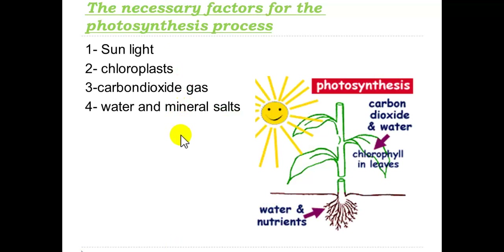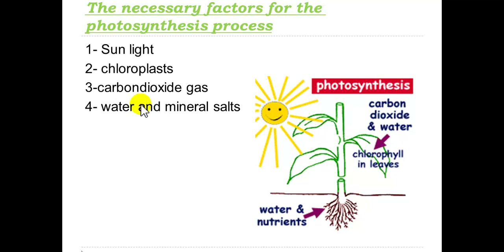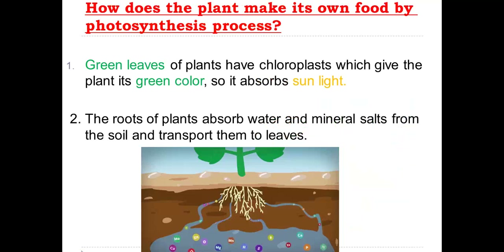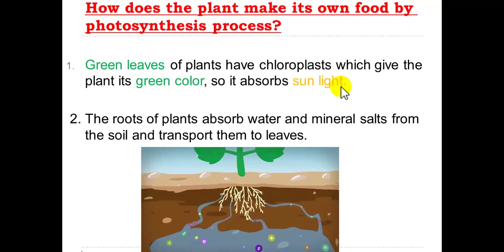The necessary factors for photosynthesis process are: sunlight, chloroplasts, carbon dioxide gas, water and mineral salts. How does the plant make its own food? First, green leaves of plants have chloroplasts, which give the plant its green color, so they absorb sunlight. If asked: what part of the plant absorbs sunlight? The answer is the green leaves.